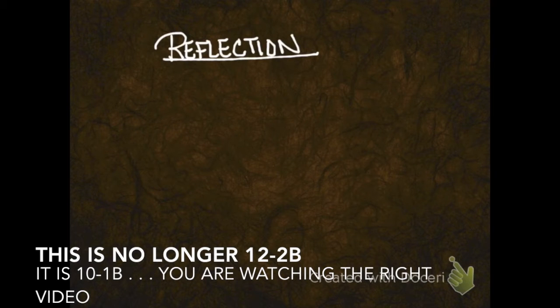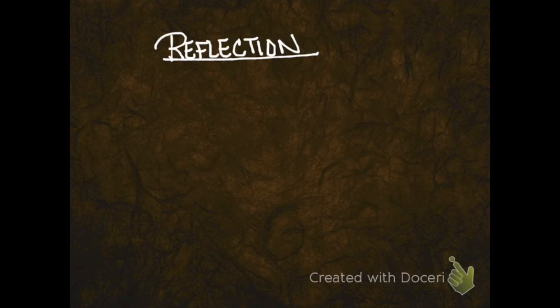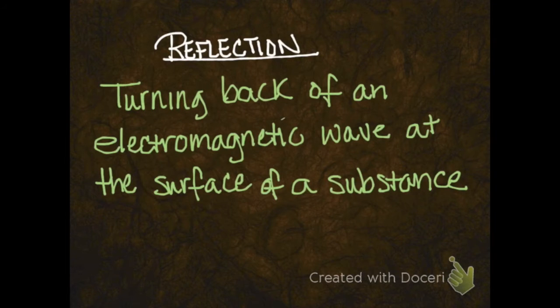Hello, welcome to 12-2B, Reflection. Let's start with the definition. What is reflection? Reflection is the turning back of an electromagnetic wave at the surface of a substance. This means that something comes in, and the way the electromagnetic waves, or light waves, hit the surface, as soon as it hits, it gets reflected back.